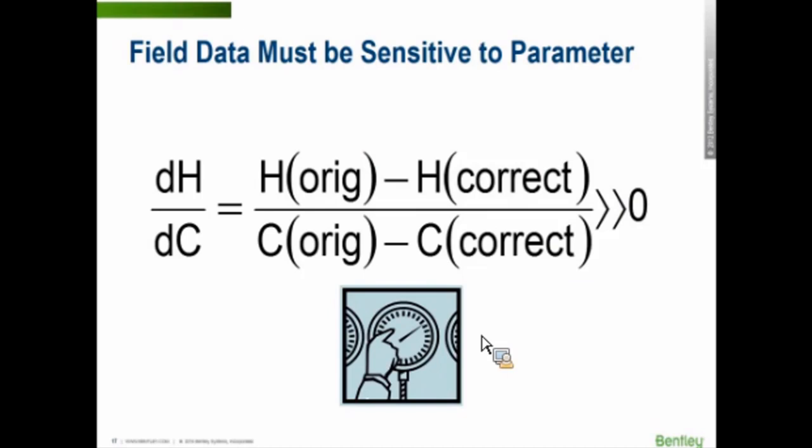When you're using field data to adjust the model parameter, say using head value to adjust C factor, the head must be sensitive to the changes in C factor. This equation is just a definition of the derivative where you can adjust C factor in, say, the south side of town with a head reading in the north side of town. Because if the velocity is too low, then the head isn't sensitive enough for the C in a different part of the model. What this is indicating for us is we need to sample our data in the same area where we're increasing flow to where the model can actually help simulate the difference between the head, the original head, versus the corrected head.